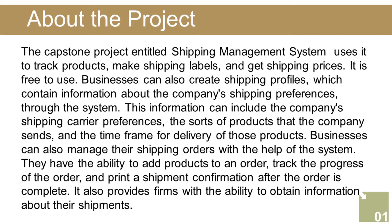This information can include the company's shipping carrier preferences, the sorts of products that the company sends, and the time frame for delivery of those products. Businesses can also manage their shipping orders with the help of the system. They have the ability to add products to an order, track the progress of the order, and print a shipment confirmation after the order is complete.